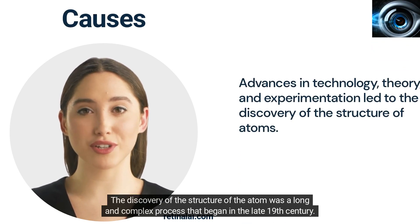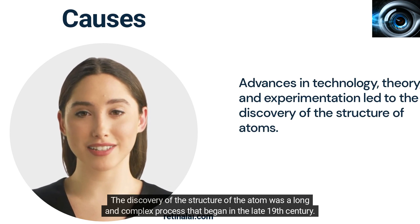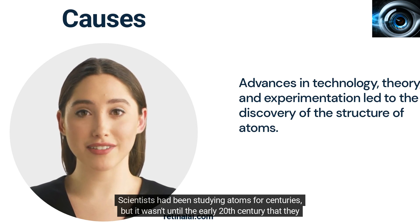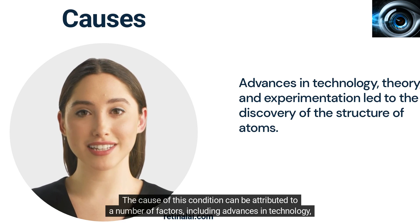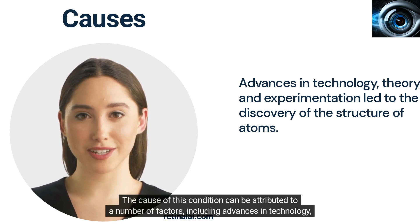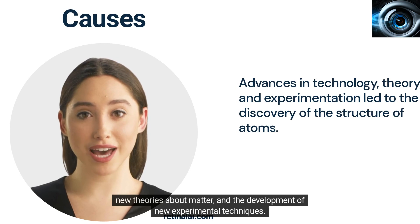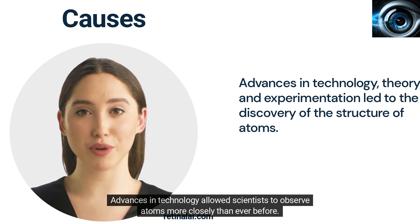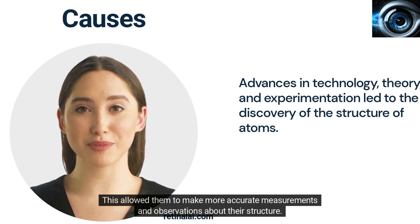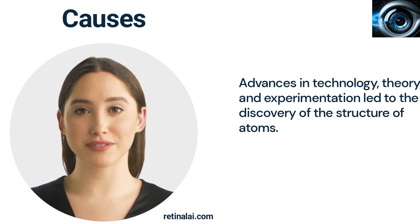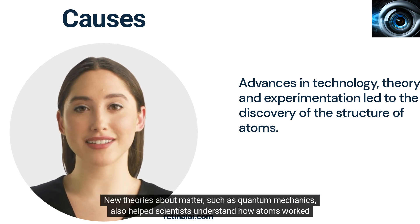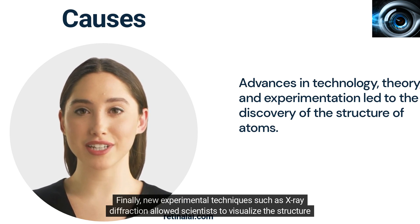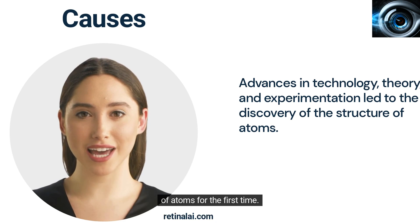The discovery of the structure of the atom was a long and complex process that began in the late 19th century. Scientists had been studying atoms for centuries, but it wasn't until the early 20th century that they were able to determine their structure. This can be attributed to advances in technology, new theories about matter, and the development of new experimental techniques. New theories such as quantum mechanics helped scientists understand how atoms worked on a deeper level, and new experimental techniques such as X-ray diffraction allowed scientists to visualize the structure of atoms for the first time.